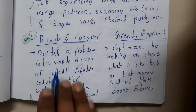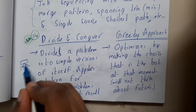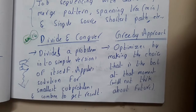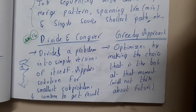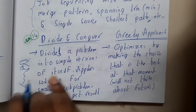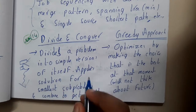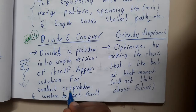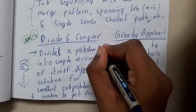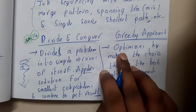Divide and conquer — I hope everyone remembers it. Here we used to divide the input or the given problem into multiples of sub-problems, solve them, and then combine them at the end. So divide and conquer divides a problem into simple versions of itself, applies solutions for those smallest problems, and then combines them to get the result.